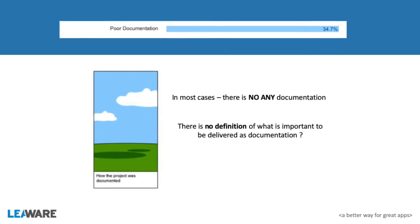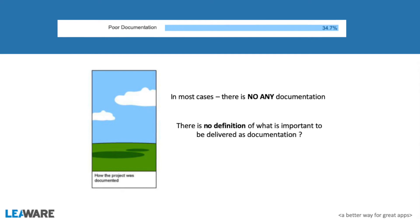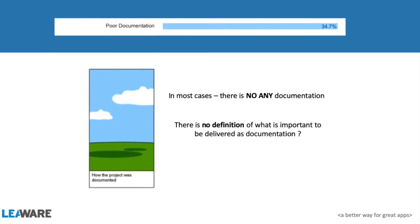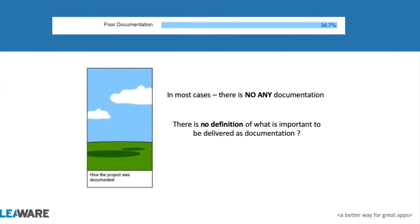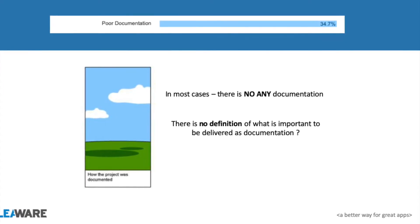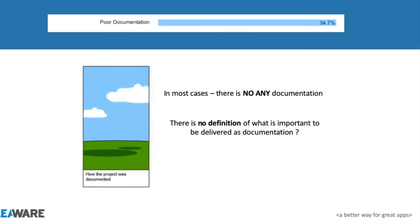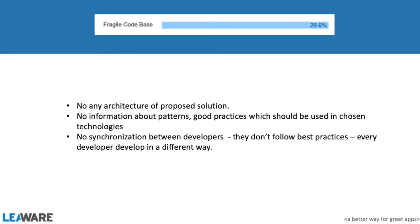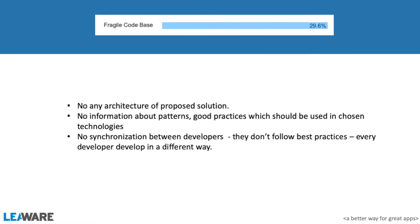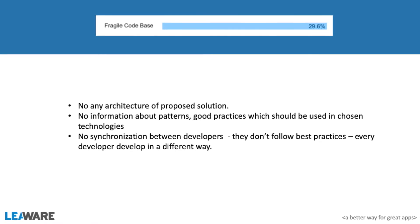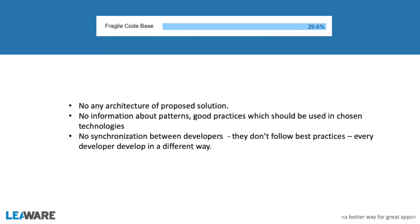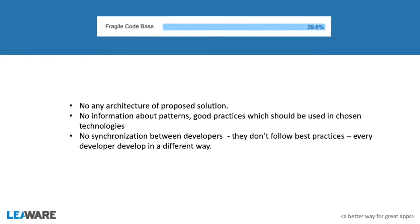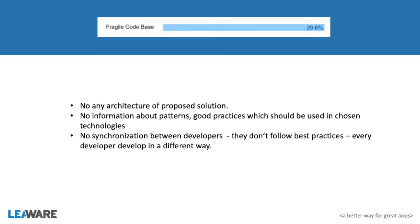The second problem is no documentation. This is typical for many projects — there is no documentation, and there is no definition of what should even be in the documentation. I can assure you that most clients don't even know what should be included. The next problem is the project codebase — there is no good architecture, no patterns, no good practices for chosen technologies, and no synchronization between developers. You can easily see who developed which part because they each did it in a slightly different way, and for sure that will be problematic.